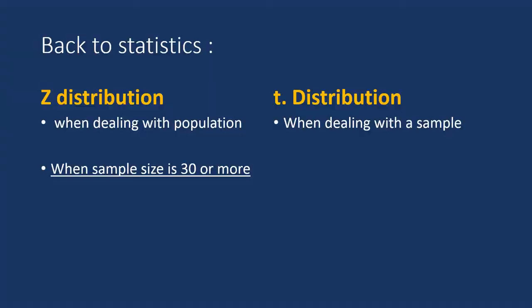Now back to statistics. When we are dealing with large numbers like population or sample large being 30 or more, we can use the Z test, the Z tables. If the sample size is less than 30, we have to use the T tables.